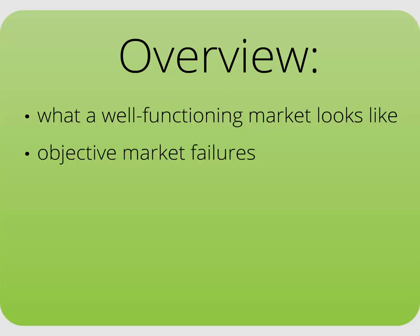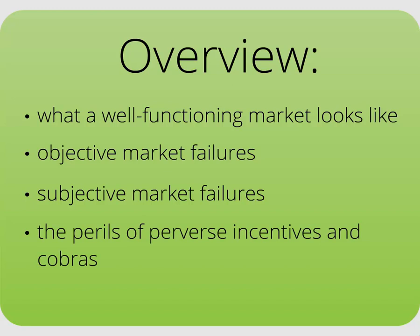After that we'll talk about objective market failures using the examples of monopolies and negative externalities. Next we'll talk about the debates over subjective market failures. And finally we'll conclude by talking about perverse incentives, which are some of the problems policy makers face when trying to address market failures. We'll talk a lot about a classic problem dealing with cobras so you'll definitely want to stay tuned for that.